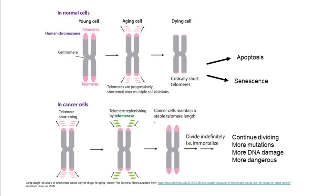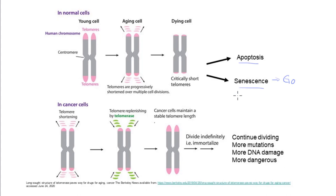Under normal circumstances, once telomeres start approaching that critically short length, that initiates signaling pathways in the cell that will take it in one of two directions: either programmed cell death via apoptosis, or senescence — a quiescent state aging cells go into in which the cell will never divide again, essentially exiting from the cell cycle and going to G0. Which pathway gets triggered depends on the cell type. This response makes logical sense, and we can definitely see the advantage of this kind of regulation.